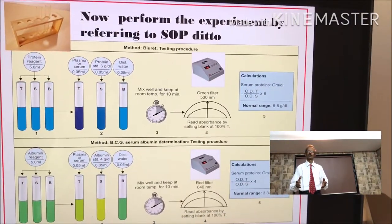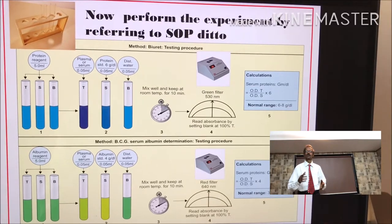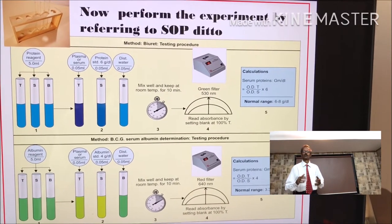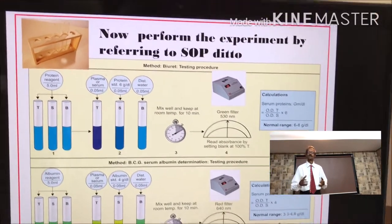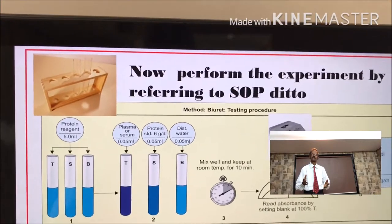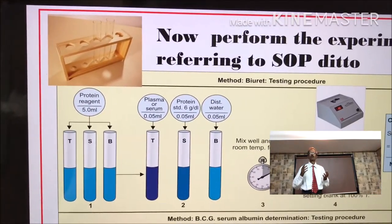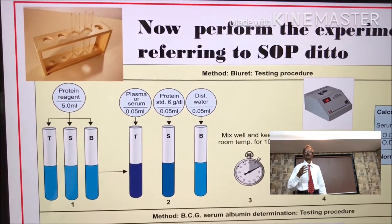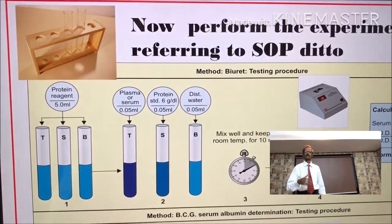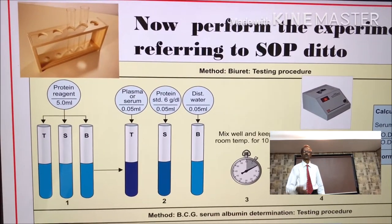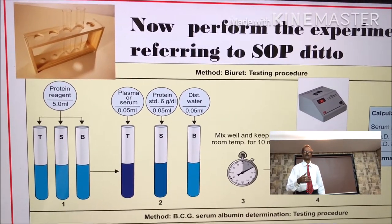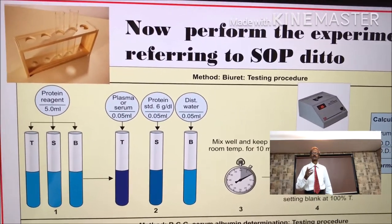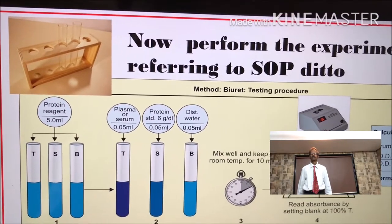Perform the experiment by referring to the SOP. First, take a test tube stand and place 3 test tubes and label them as T for test, S for standard, and B for blank.